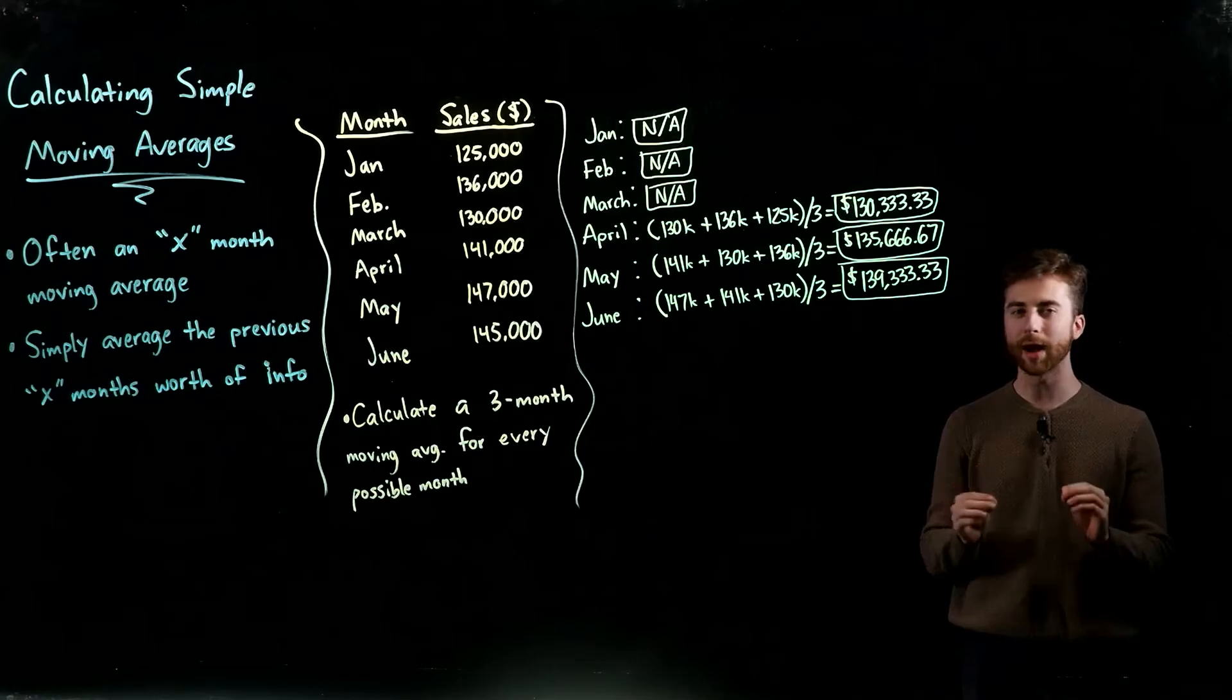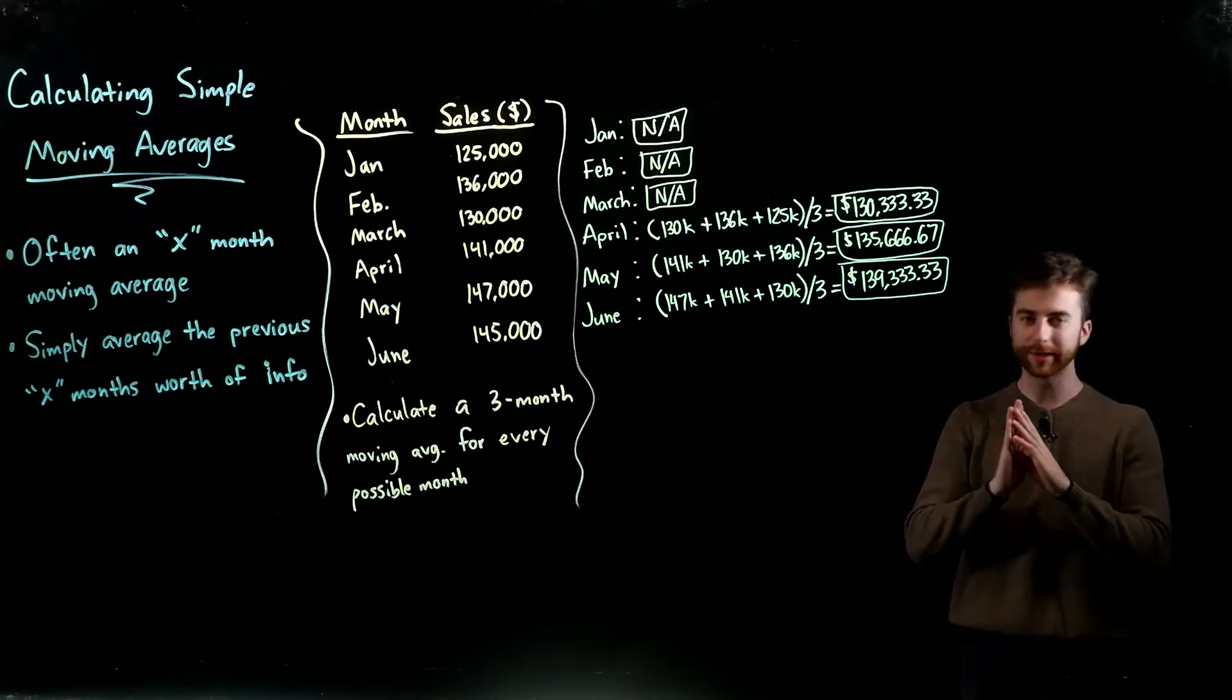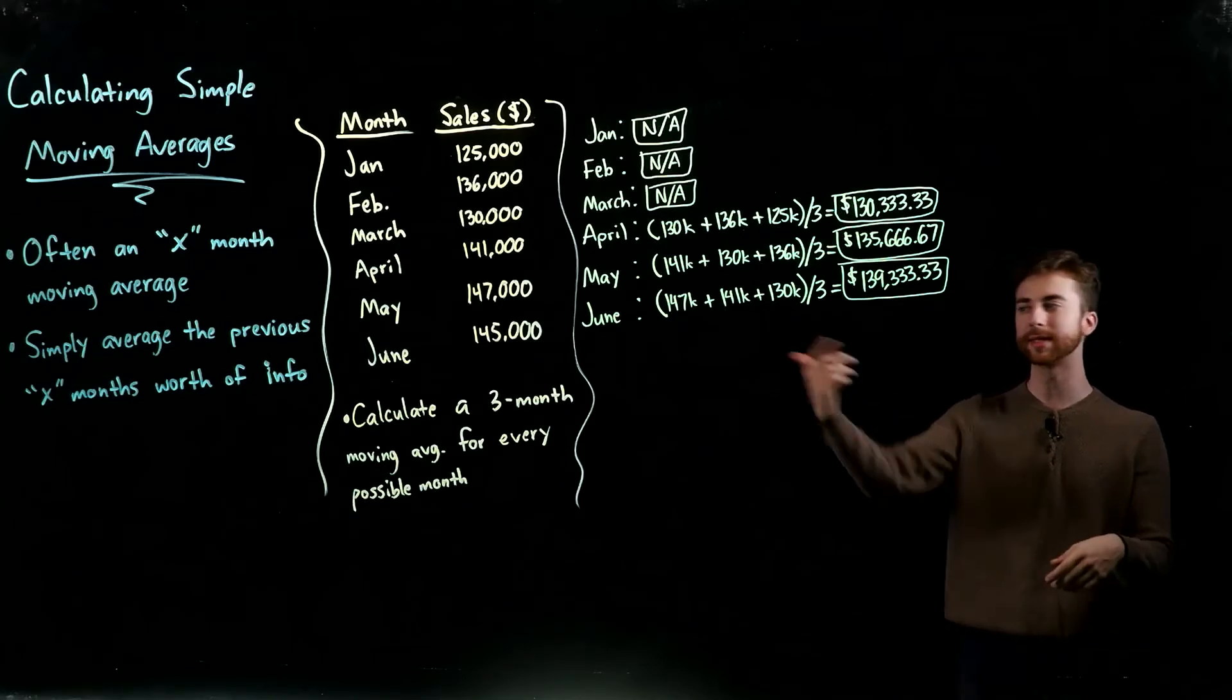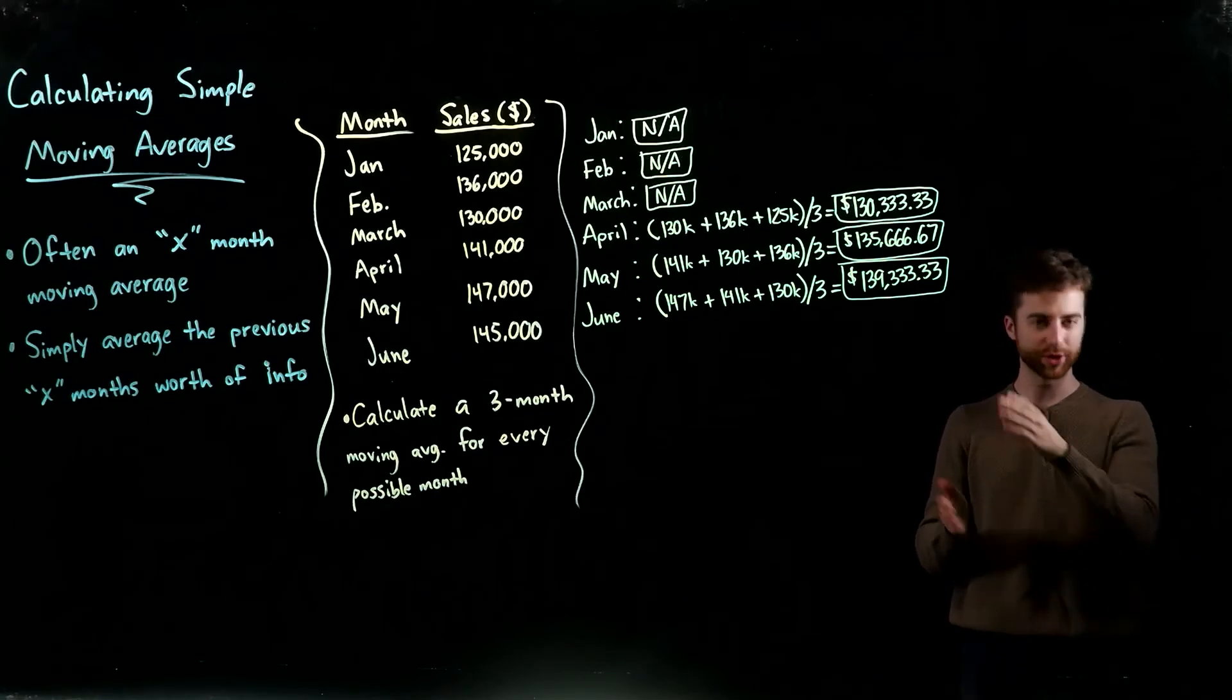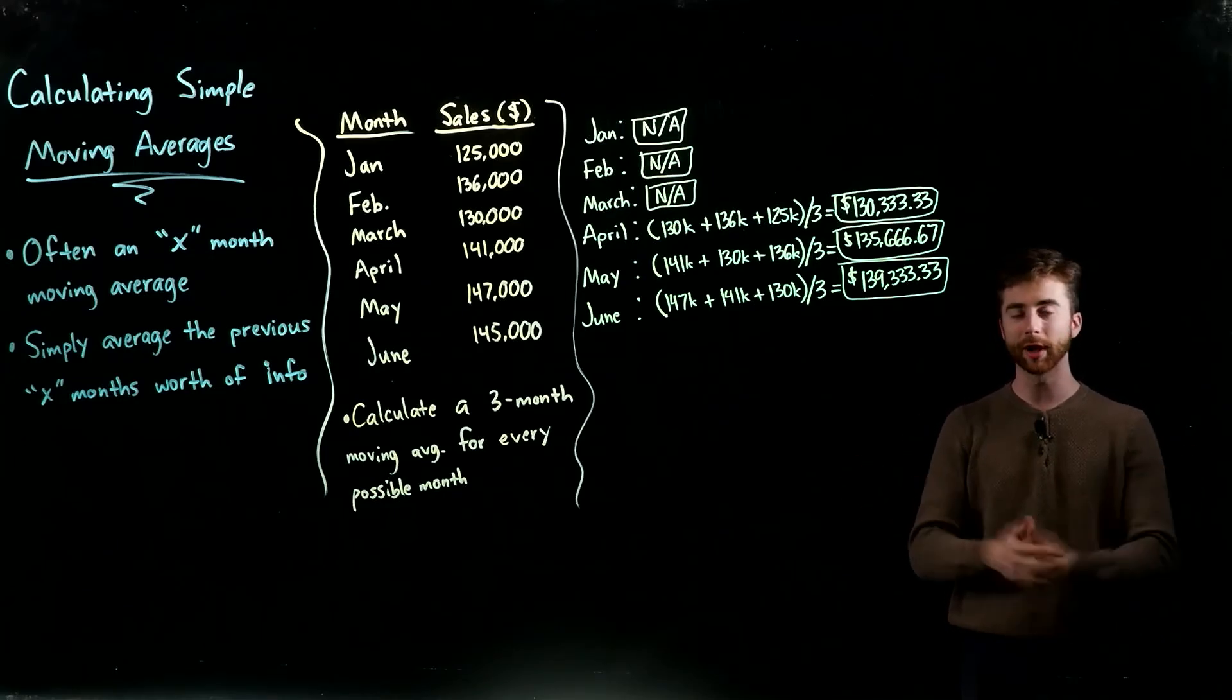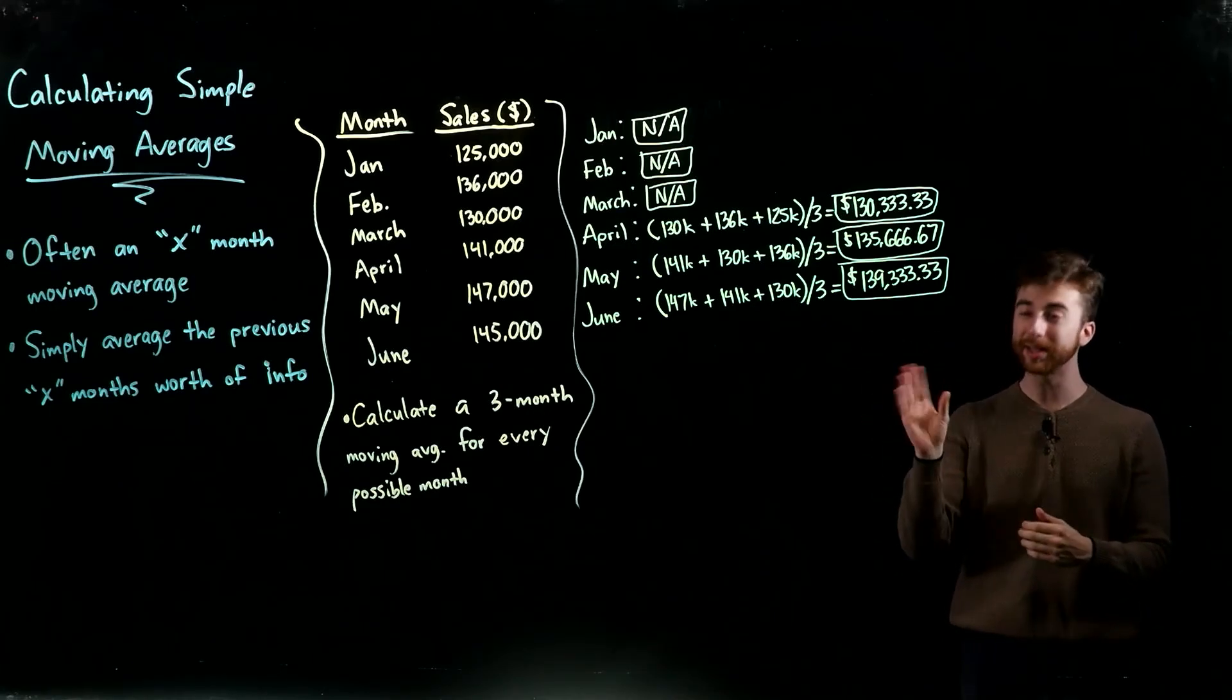This might be an obvious point, but I want to make it extra clear that you're not just dividing by three every time. The reason we're dividing by three is we're doing a three-month average. Just think about however many months the moving average is—in this case it was three, it could be five or however many months. Just take the average of those months, which is adding up each of those figures divided by the number of figures you add together, and you should be good to go. You can see it's a pretty simple process—just averaging the previous X months worth of information. This should give you a good example.